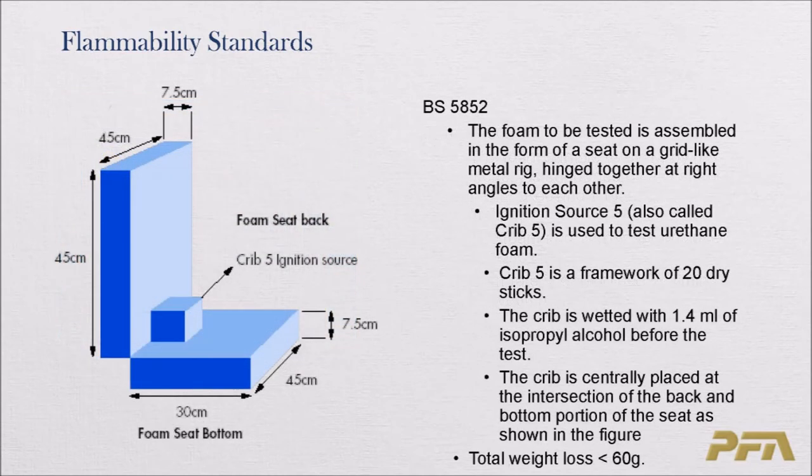British Standard 5852 is a furniture flammability standard. Instead of a cigarette, it uses Ignition Source 5, also referred to as Crib 5. Crib 5 is a framework of 20 dry sticks wetted with 1.4 milliliters of isopropyl alcohol, placed at the intersection of the back and bottom portions of the seat. The total weight loss of both samples must be less than 60 grams to pass.